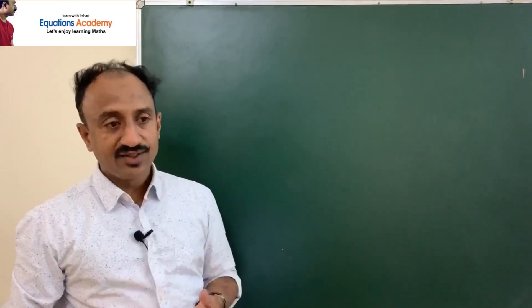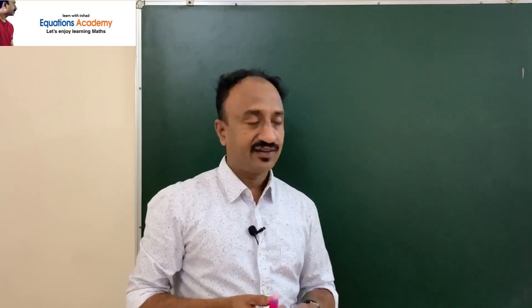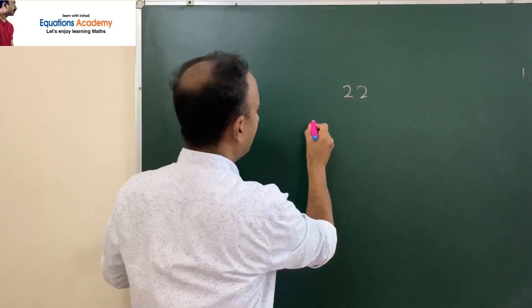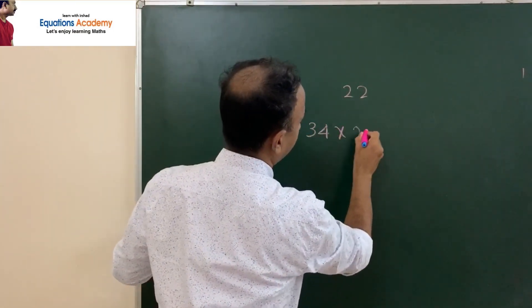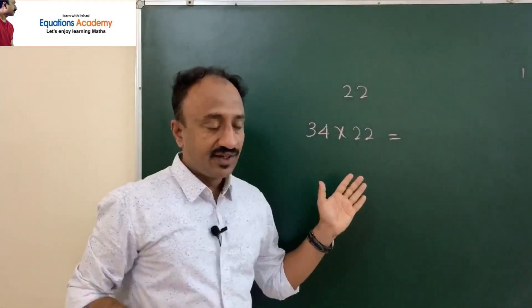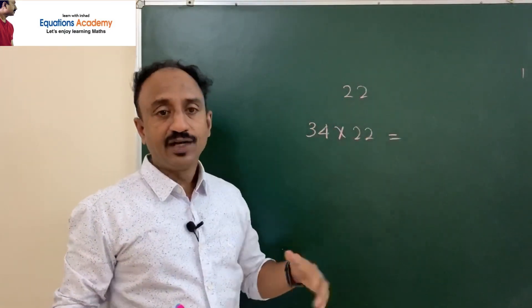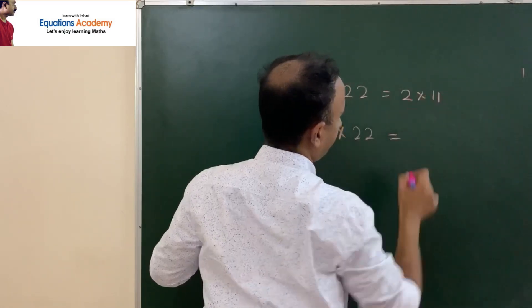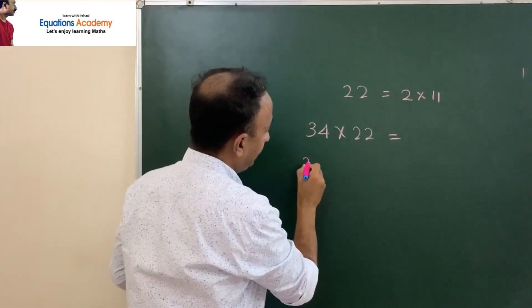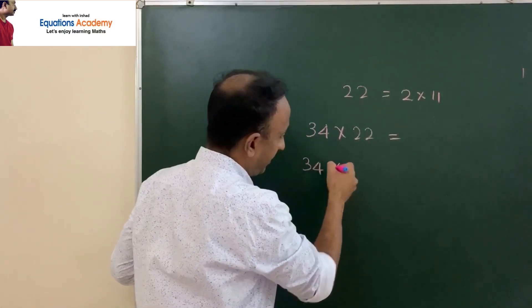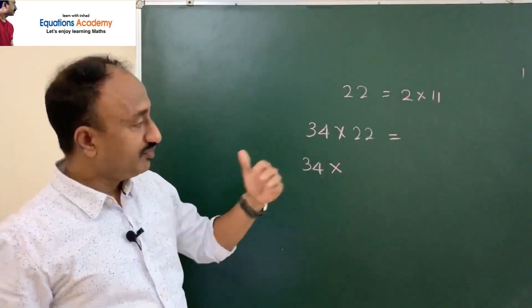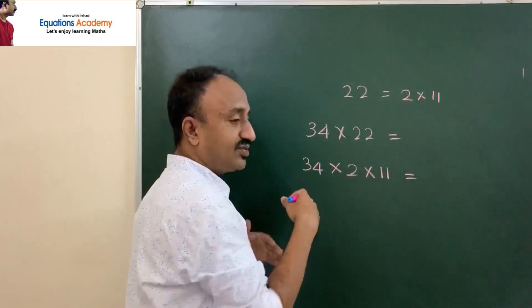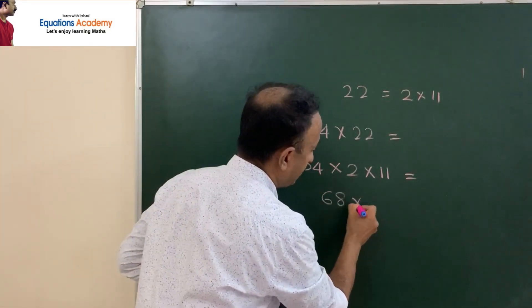Let's multiply a two-digit number by multiples of 11. Suppose 34 times 22. How to do this? We know that 22 is the multiple of 11, that is 2 times 11. So 34 multiplied by, instead of 22, we will write 2 times 11. We know that 34 times 2 is double of 34, which is 68 times 11.